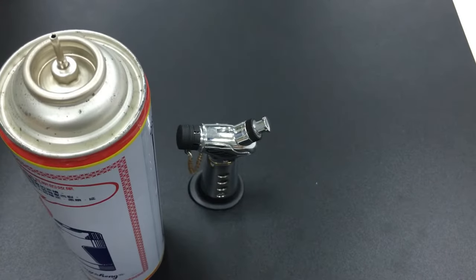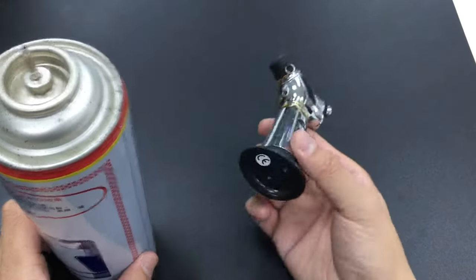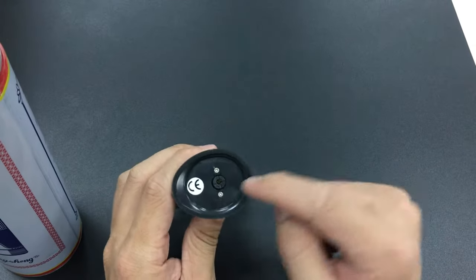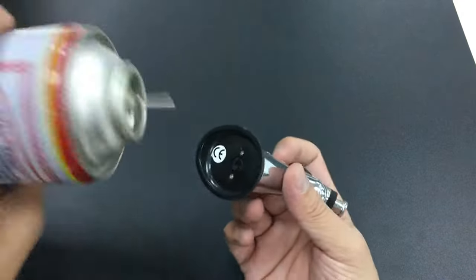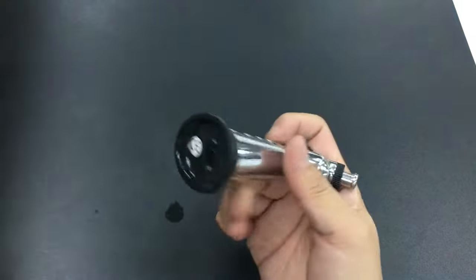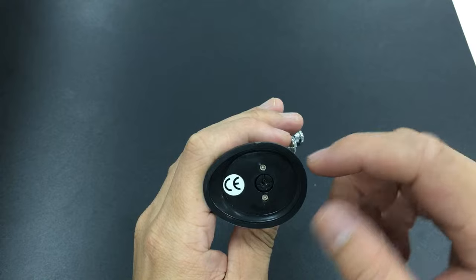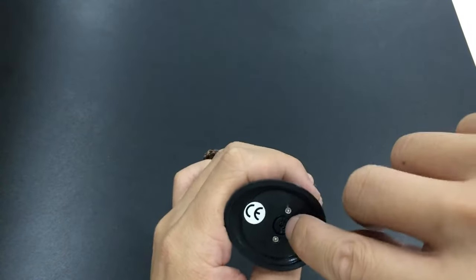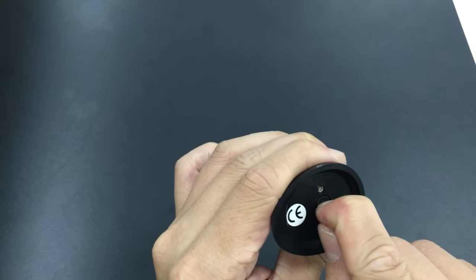This is the MT-8028 lighter. To adjust the flame size, you have to do it from the bottom. First, let's fill the gas in. My recommendation is not to turn the gas all the way, just to half, about 180